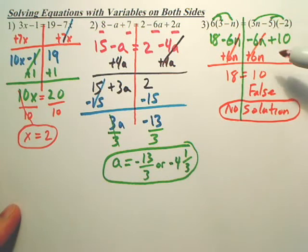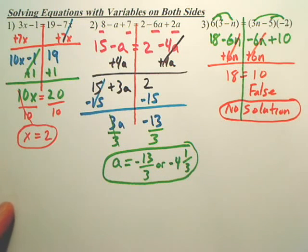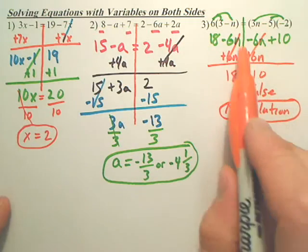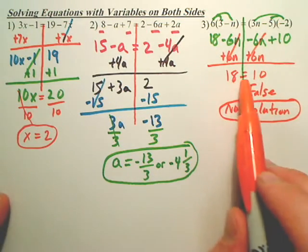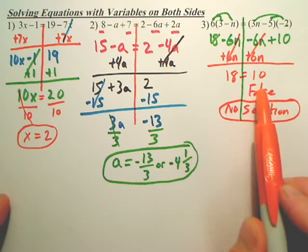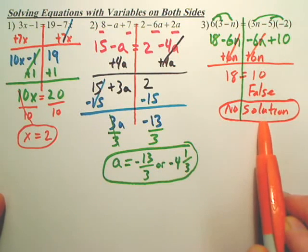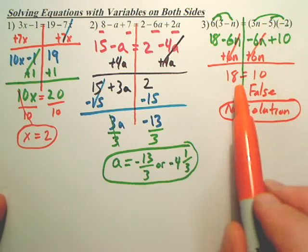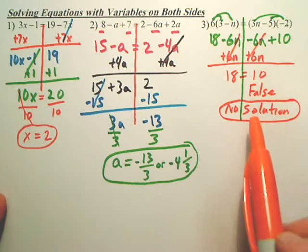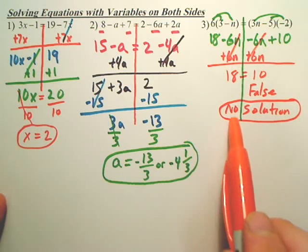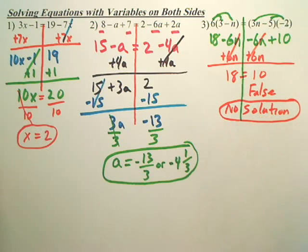This is called a no solution, meaning there is no answer to plug in for n to make this work. Now one thing you got to be aware of: if everything cancels out like this and you end up with like 18 equals 18, that's a true statement, right? Yes. That would be infinite solutions, meaning any number you plug in works. So again, if what's left over is true, it's infinite solution. But in this situation, it's false, so there is no solution.